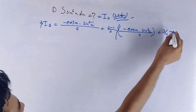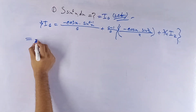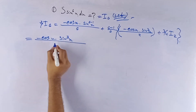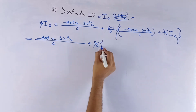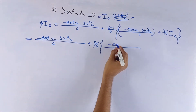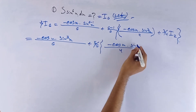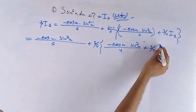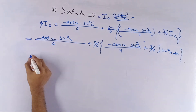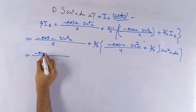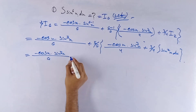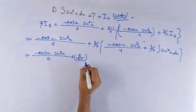That whole bracket equals to minus cos x times sine to the power 5x by 6, plus 5 by 6 — with denominator 4 — and numerator is minus cos x times sine to the power 3x, plus 3 by 4 of the integration of sine squared x dx.